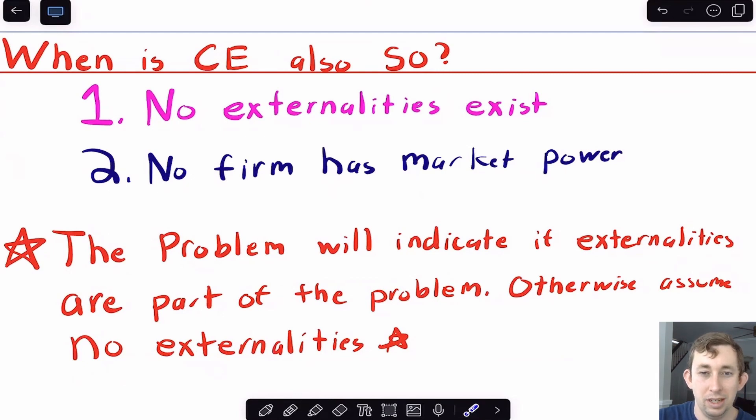This is confusing, because now that you've learned this, you might think, well, there's externalities everywhere. So you're looking for those sort of externalities in every problem you're taking. But that won't be the case, the AP exam will make it very clear if there's externalities or not.